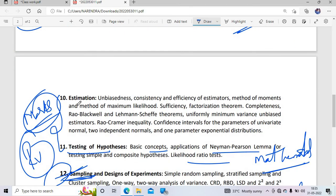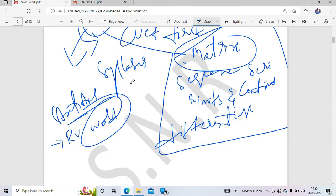When you move to estimation and testing of hypothesis, these are also very important. Estimation is compulsory - the properties like unbiasedness, consistency, efficiency, sufficiency are compulsory topics with high chances of appearing. This is the strategy I'm suggesting.